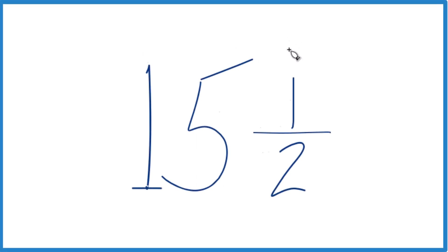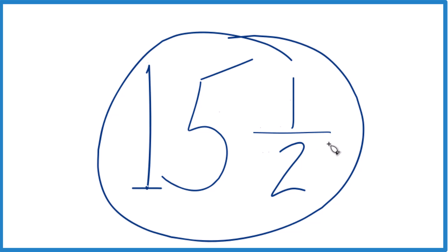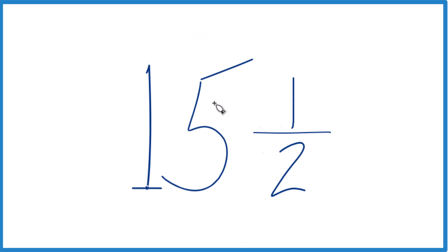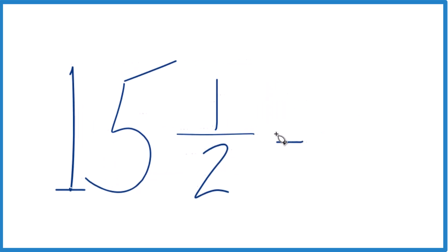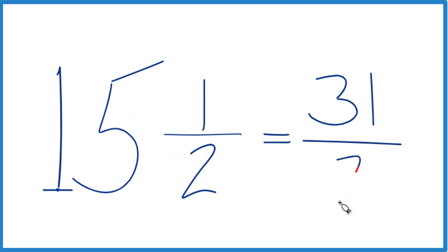Here's how you can write the mixed number 15 and 1 half as an improper fraction. Take the 15, that's the whole number, multiply it by 2. 15 times 2, that's 30. Then add 1, you get 31. That's going to be the numerator. Then bring the 2 across for the denominator.